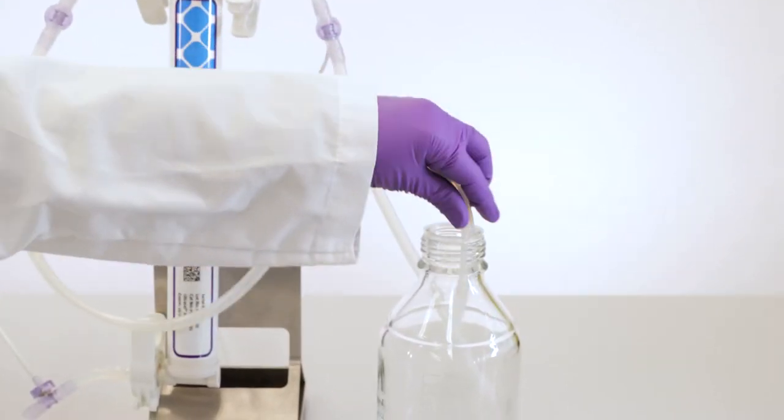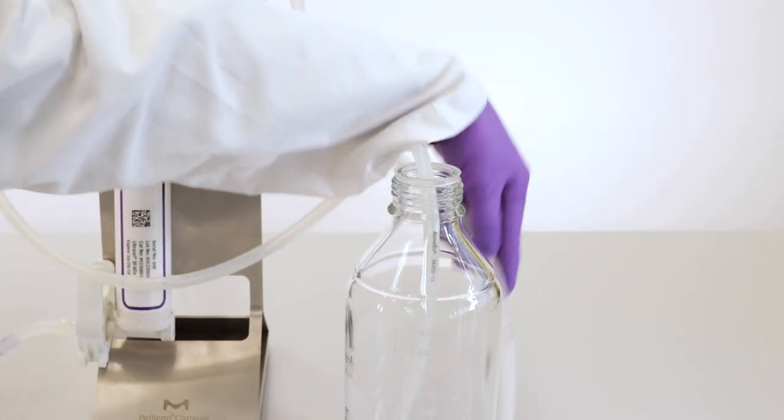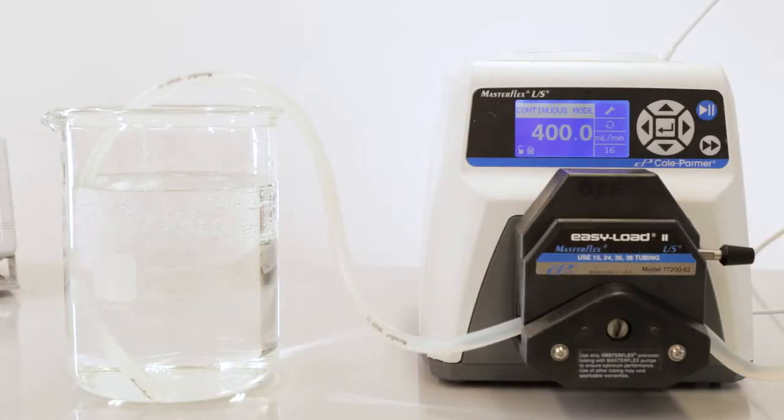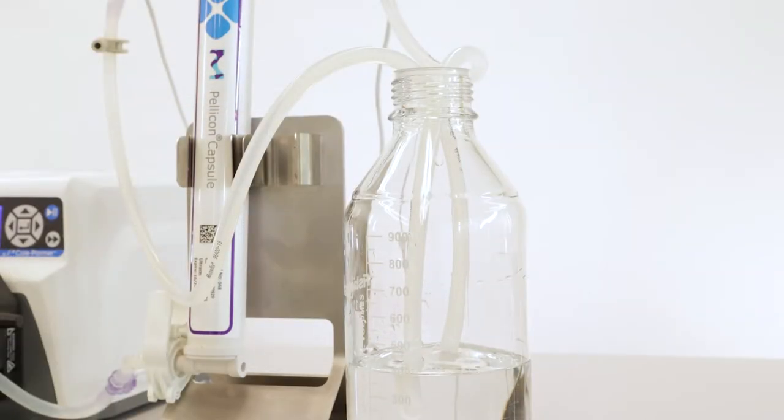Direct the permeate and retentant lines to a waste container or to drain and pump conditioning buffer into the capsule feed port to condition your TFF system.